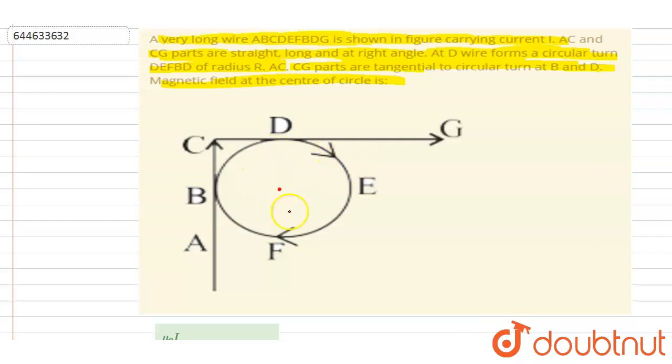One because of this circle, other because of this semi-infinite wire. Let's say this is wire one, wire two, and this is wire three. At the center, if you see, this distance will be R and this distance will also be equal to R.